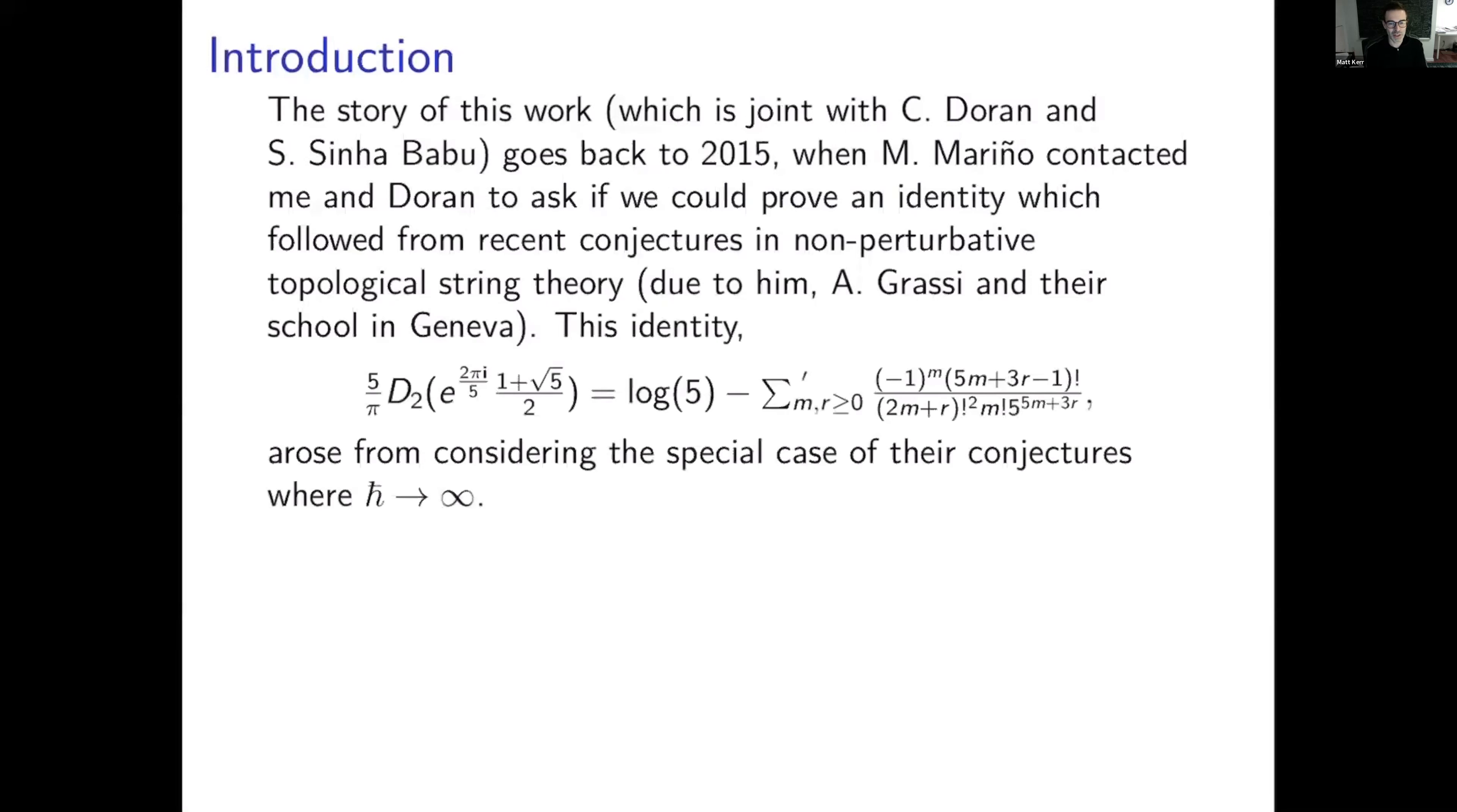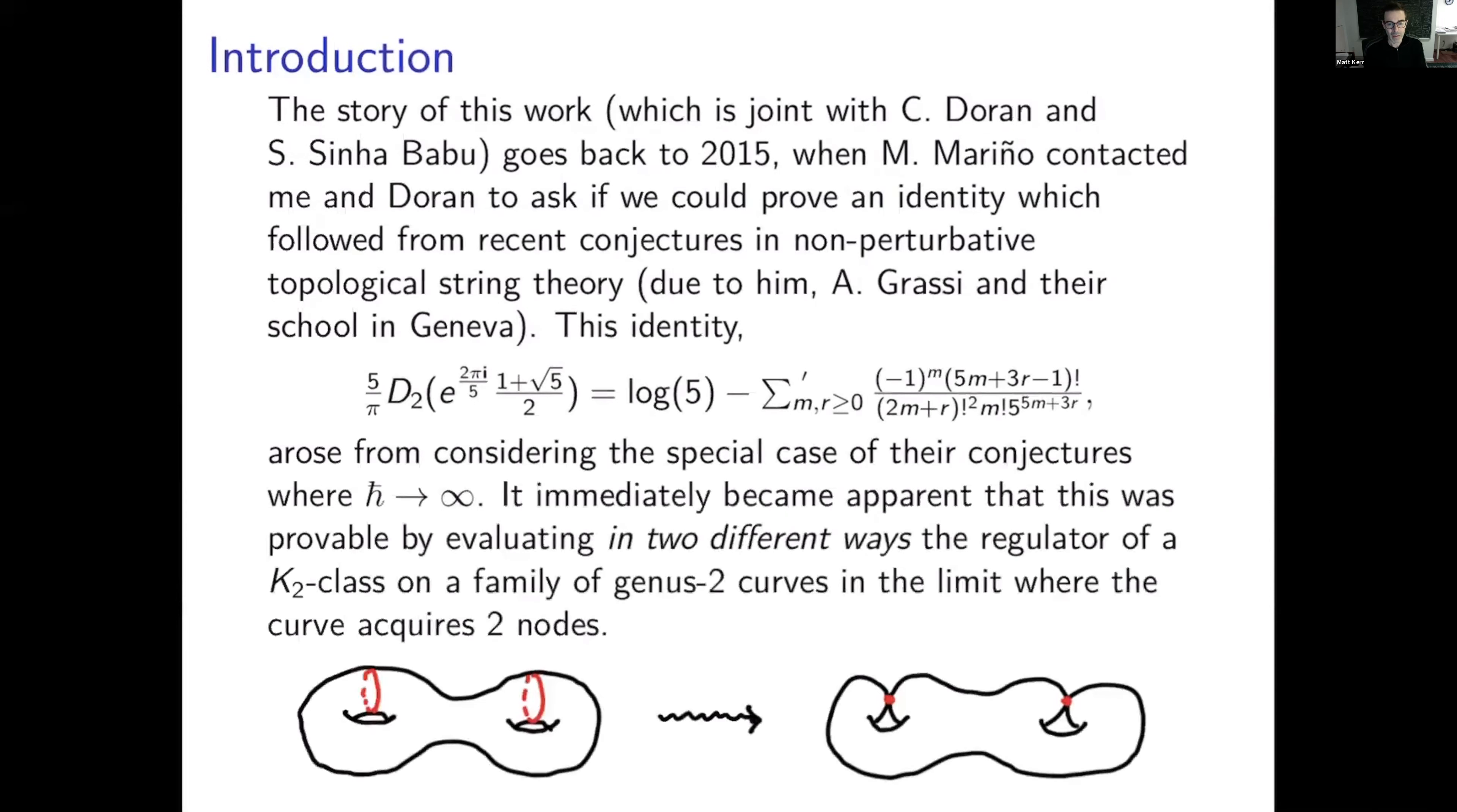So here's one of the two identities that he mentioned, and it arose from considering the special case of their conjectures in the Tuft limit, where h-bar goes to infinity. But it immediately became apparent that this was really a conjecture about limits of regulators on K2 of curves. So it was provable by evaluating in two different ways, the regulator of such a class on a family degenerating to its maximal conifold point, where it becomes of genus zero after normalizing.